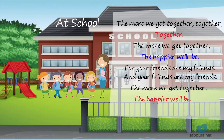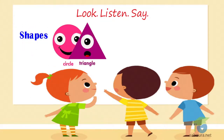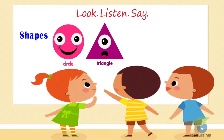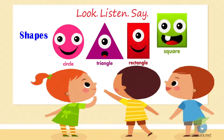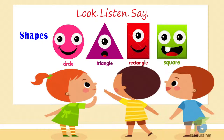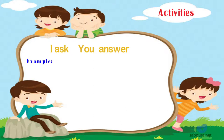Look, listen and say. Shapes: a circle, a triangle, a rectangle, a square. Activities: I ask, you answer. Example: How many circles are there? There are five circles.